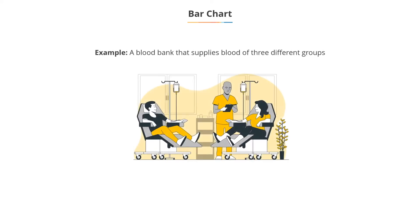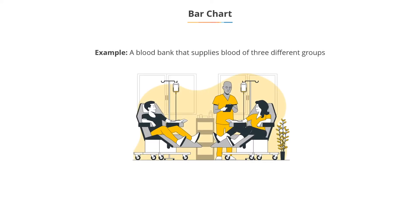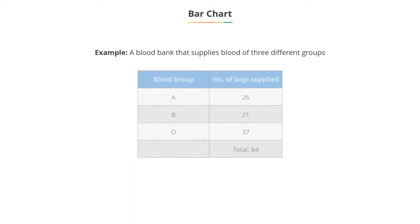Consider a blood bank that supplies blood of three different groups: A, B, and O. Blood is stocked in plastic bags. The number of plastic bags supplied for each group are shown in the table.